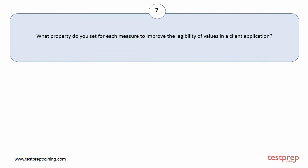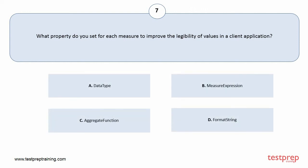Question number 7. What property do you set for each measure to improve the legibility of values in a client application? Your options are: A. Data type. B. Measure expression. C. Aggregate function. D. Format string. The correct answer is option D.